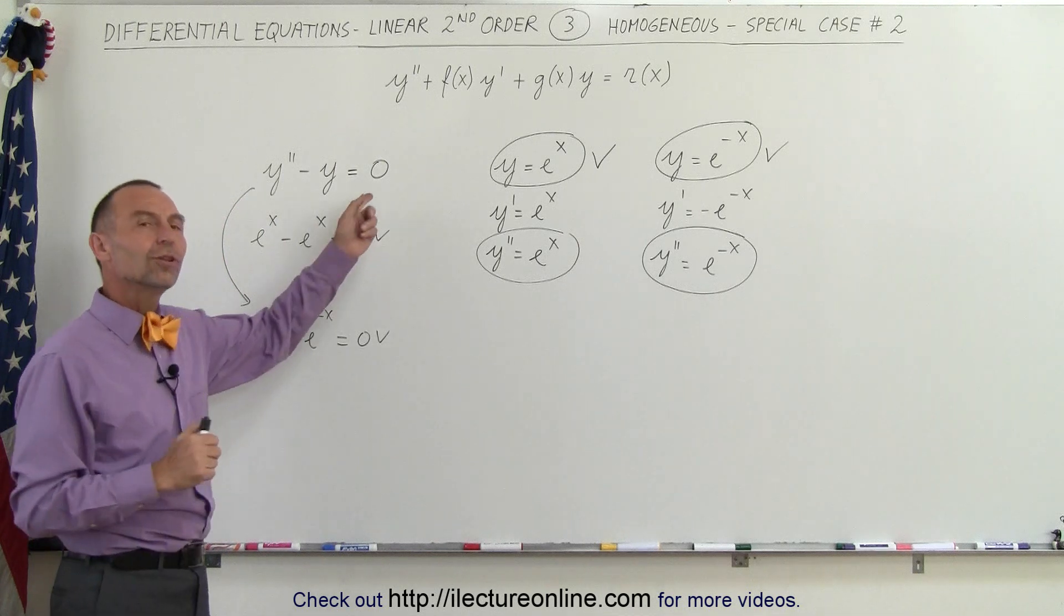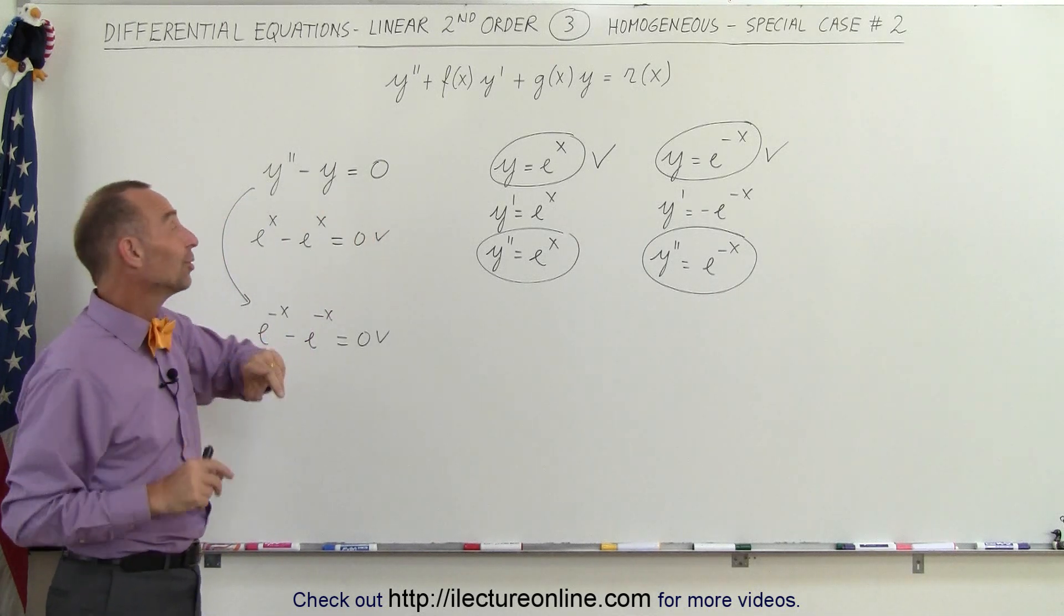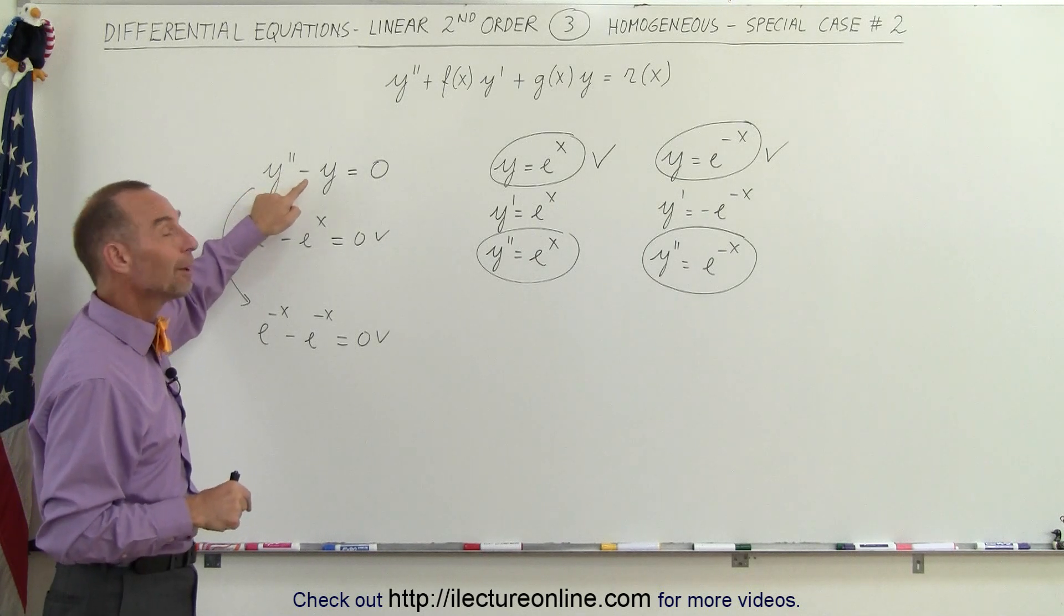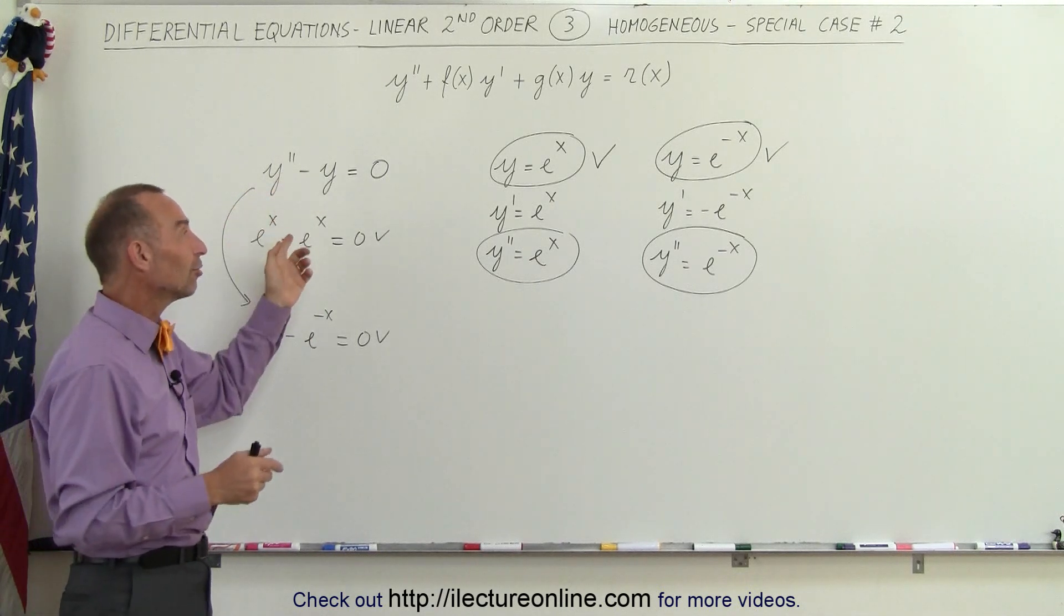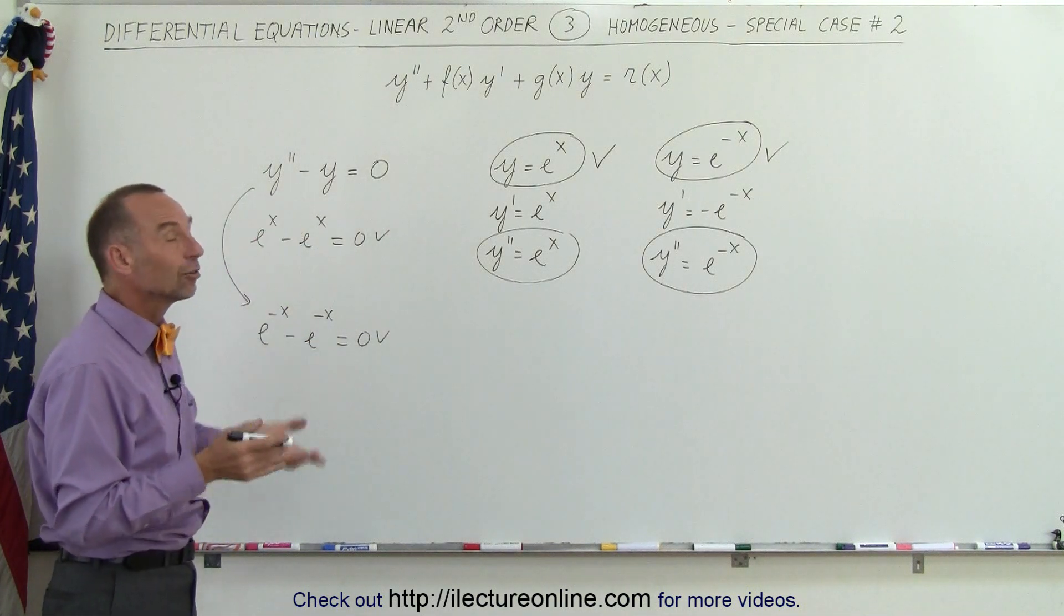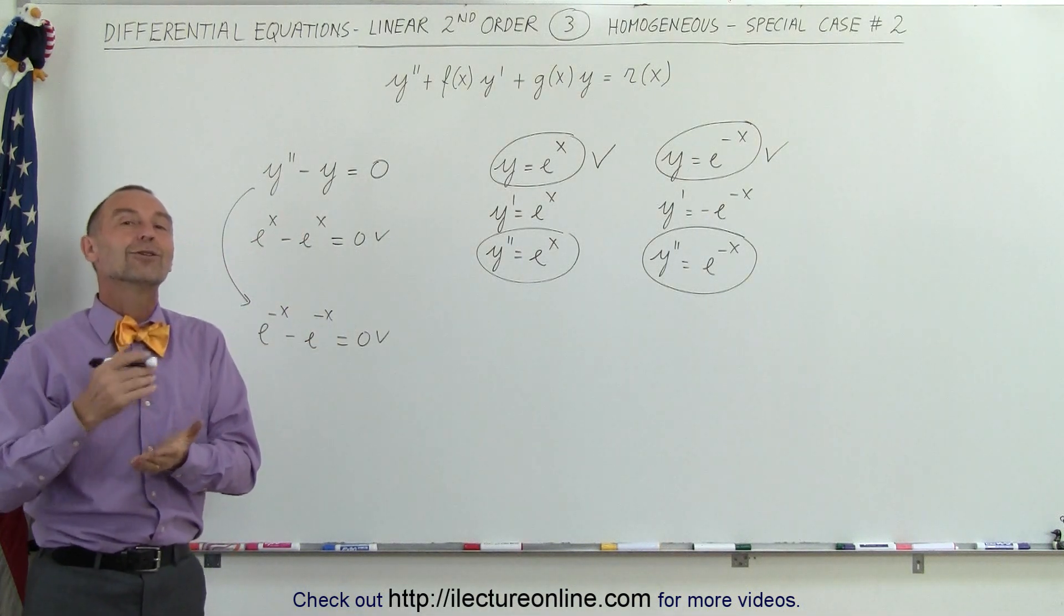Now you say well wait a minute, didn't you just do that in the last video? And the answer is no. The last video this was y double prime plus y. Here it's y double prime minus y. So when it's plus y the solution is either the sine or the cosine. When it's minus y then the solution is e to the x or e to the minus x.